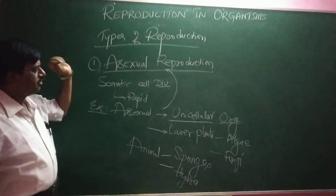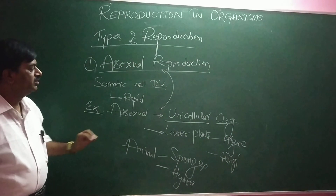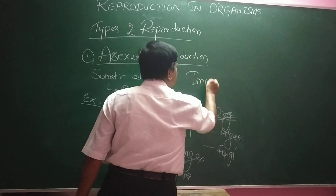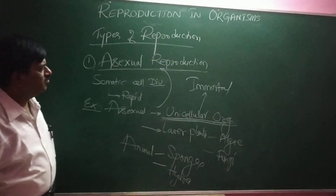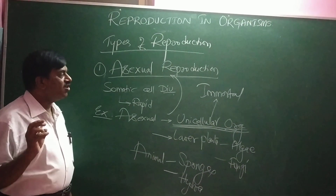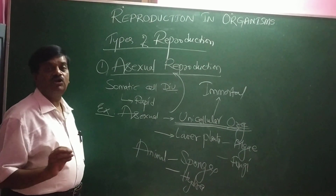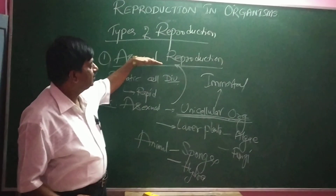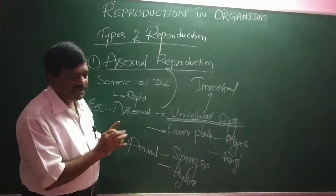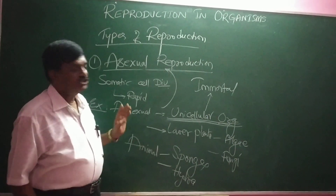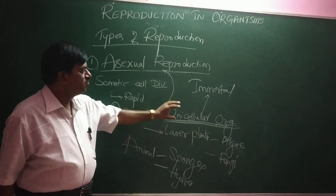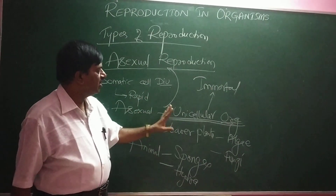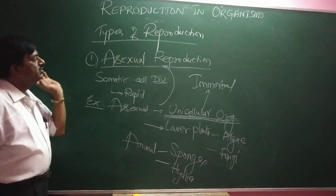One more important word: unicellular organisms are always called immortal — there is no death for unicellular organisms. Because the unicellular organism undergoes binary fission, or asexual reproduction, and the parent cell splits into two daughter cells. So there is no death for unicellular organisms.